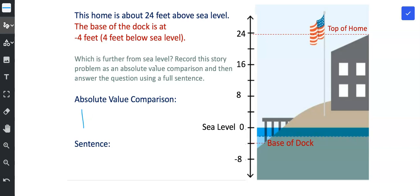So the absolute value of 24, that represents the height of the home above sea level. And then we're comparing this to the absolute value of negative 4, which represents the distance between the base of the dock and sea level. The absolute value of 24 is 24, and the absolute value of negative 4 is 4. The symbol we need is the greater than symbol because 24 is greater than 4.